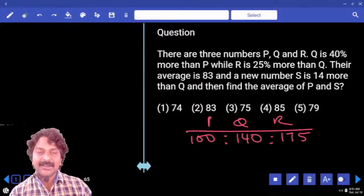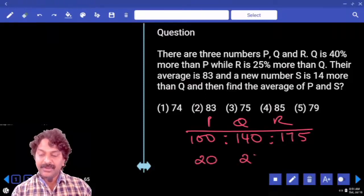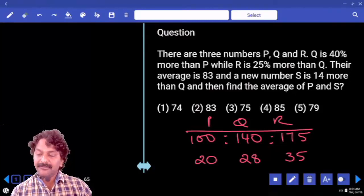So all are five multiples only. So it is 20 times, 28 times, 35 times.